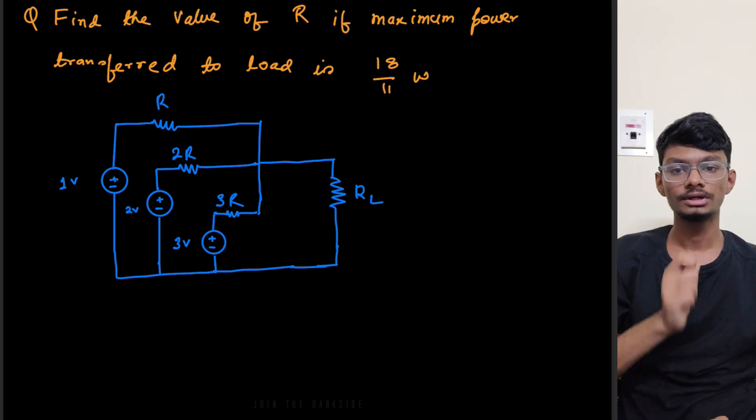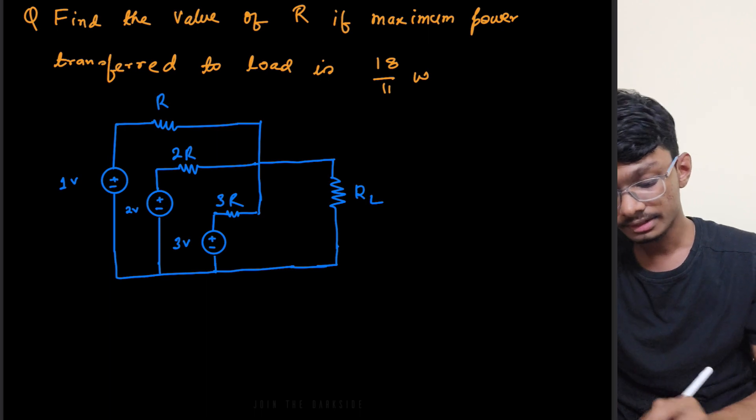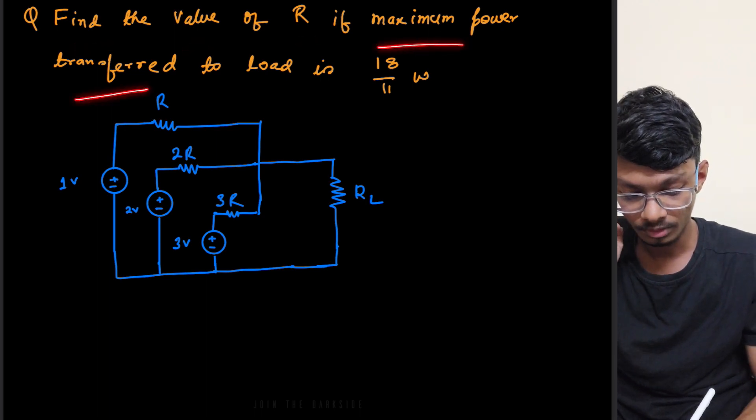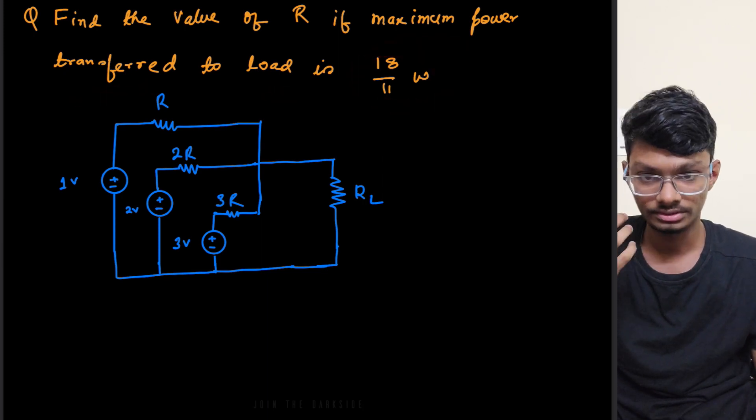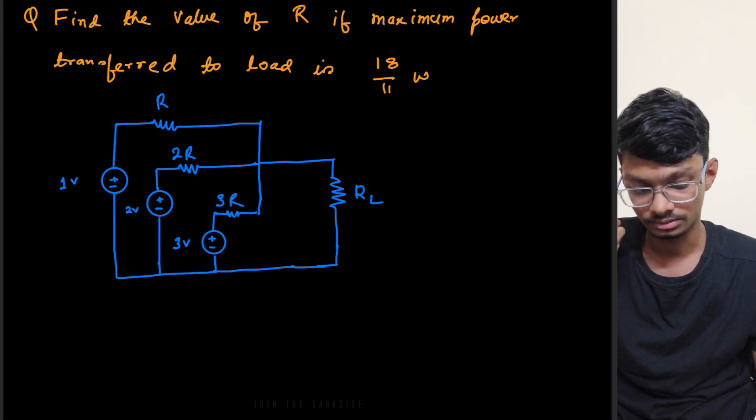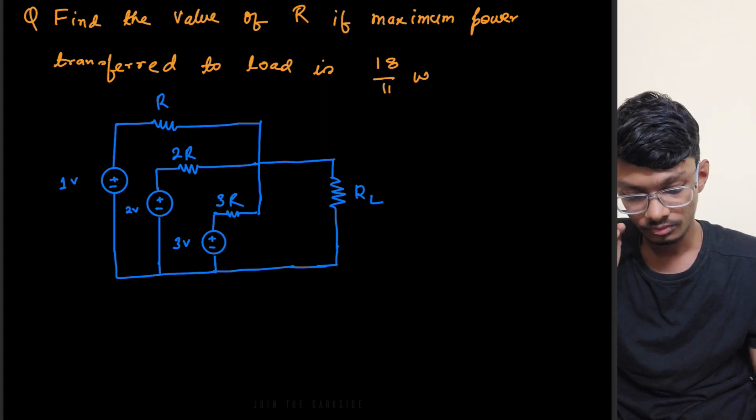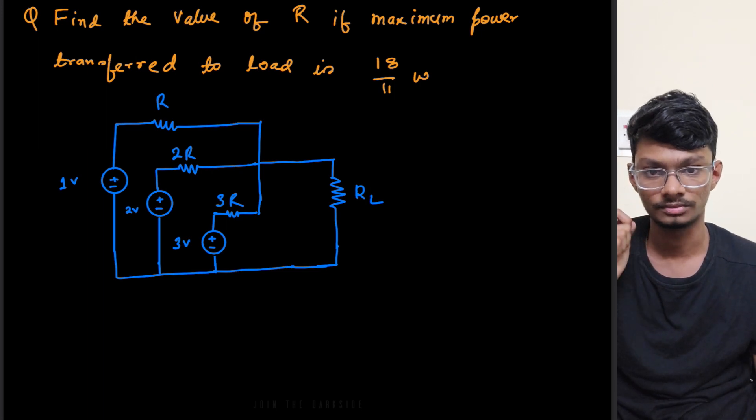Hello everyone, I am Anish and today we are going to solve the given below question which states: find the value of R if the maximum power transferred to the load is 18 by 11 watts. So what is the load here? Load is basically this RL and it's telling us to find the value of R. From the question itself we can understand that this is a question of network theorem which is of maximum power transfer.